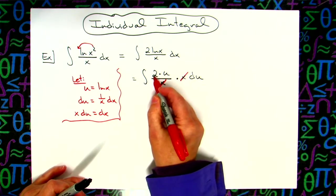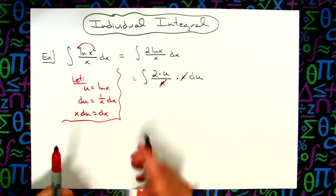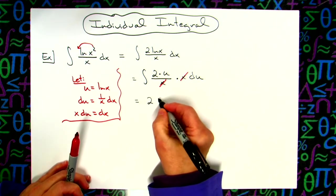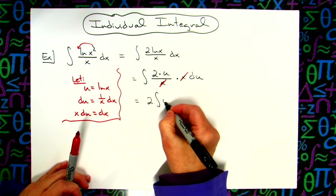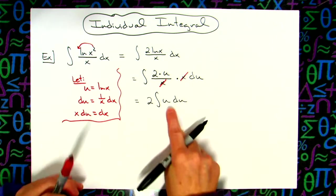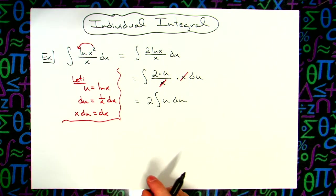I'm going to take this 2 and pull it out in front of the integral before I integrate. So there's my constant 2 coming out in front. The integral of u du. Now I'm down to a straight u there. Easy to integrate.